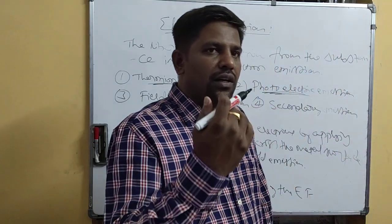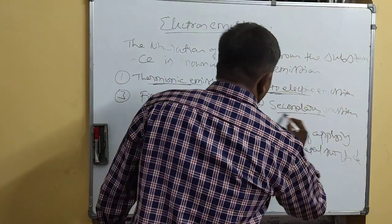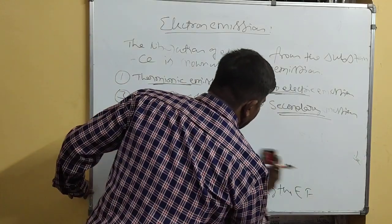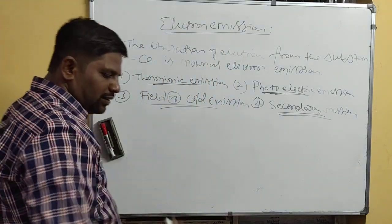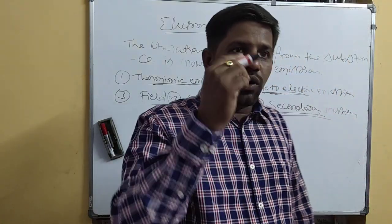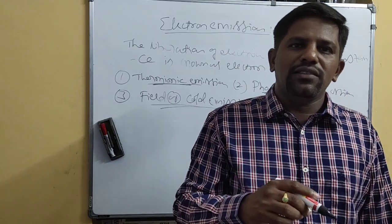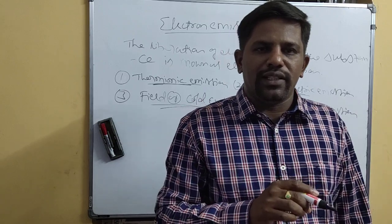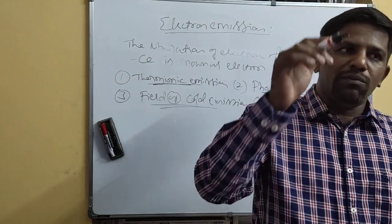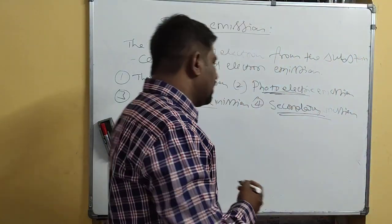The last one is Secondary Emission. What do you mean by Secondary Emission? Secondary Emission is the process of getting electrons from a metal surface by the bombardment of fast-moving electrons on that metal surface.